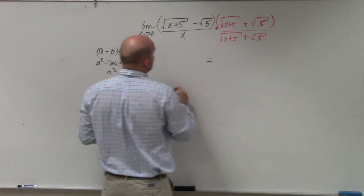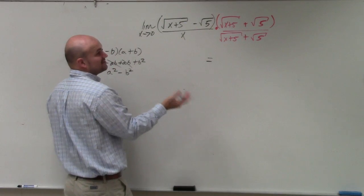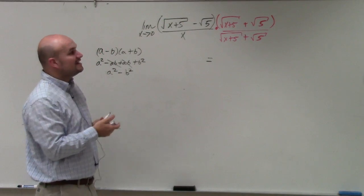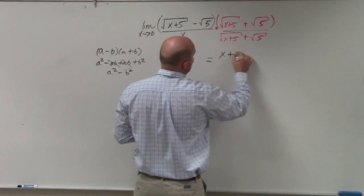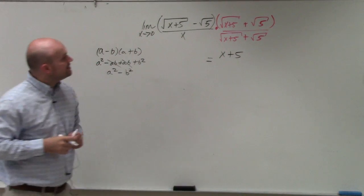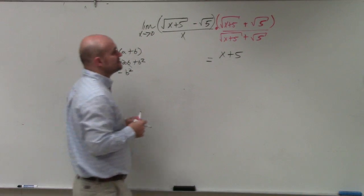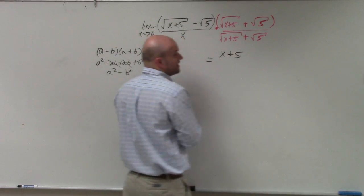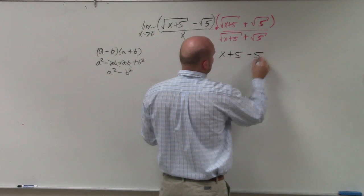So when I go and set the equal to this, x plus 5 times x plus 5, I'm sorry, the square root of x plus 5 times the square root of x plus 5 is going to be the square root of x plus 5 squared, which is just going to leave me with x plus 5. Negative square root of 5 times positive square root of 5 is going to give us a negative square root of 5 squared, which is just going to leave me with a negative 5.